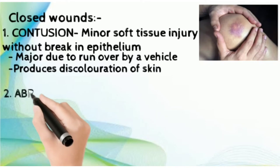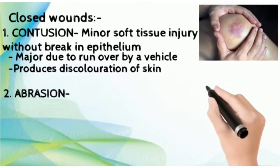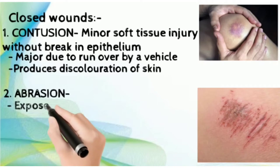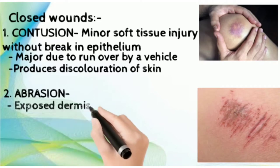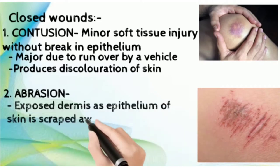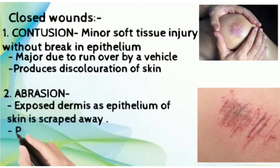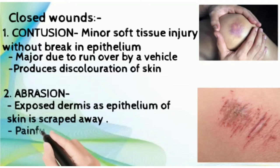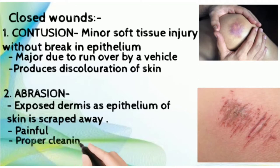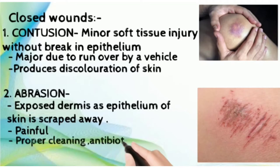The second type of closed wound is abrasion. As you can see in the picture, the dermis is exposed because the surface epithelium of the skin is scraped away, exposing the dermis. It is a painful wound and requires proper cleaning, proper dressing, and antibiotics should also be taken.